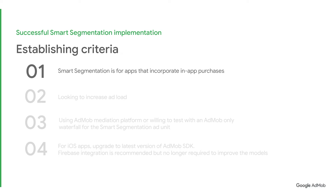That being said, let's take a look at some criteria that would make your app a good candidate for Smart Segmentation. Smart Segmentation will likely be a useful tool for you if you meet all four of the following criteria. One: you currently have an in-app purchase component and are looking to monetize your non-paying users. Two: you're looking to increase your ad load by trying a new format or adding a new placement — for example, adding interstitials to an app that usually only uses rewarded ads.